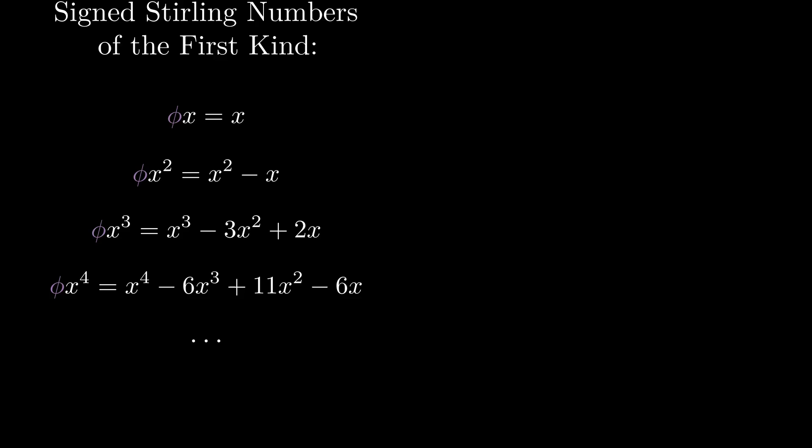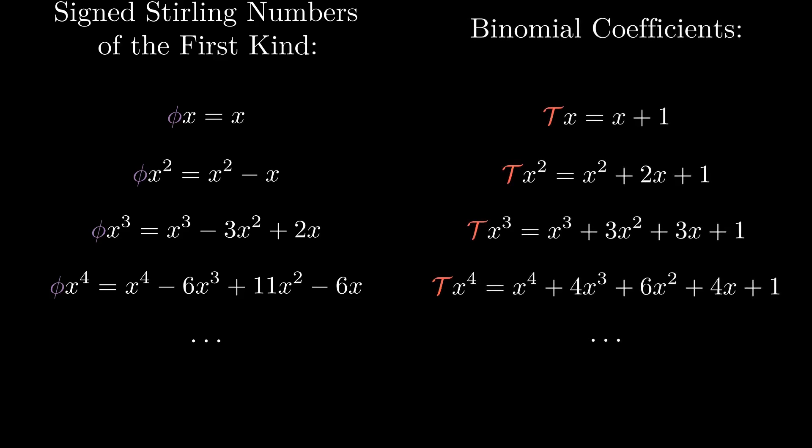Notice how we can express the forward difference in terms of T. Delta equals T minus 1. It's also worth mentioning that, just like how phi gave us the Stirling numbers as coefficients, T is the operator that gives us the binomial coefficients.